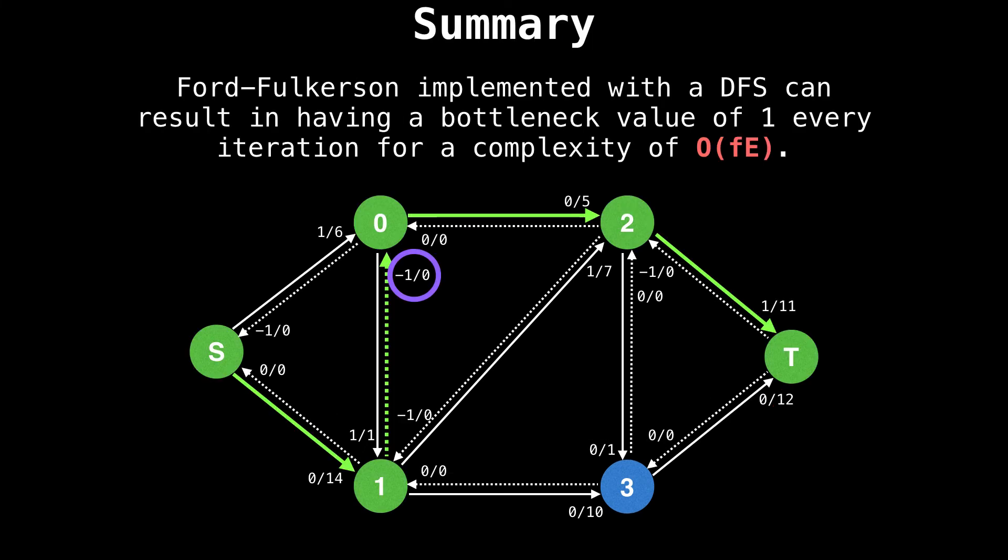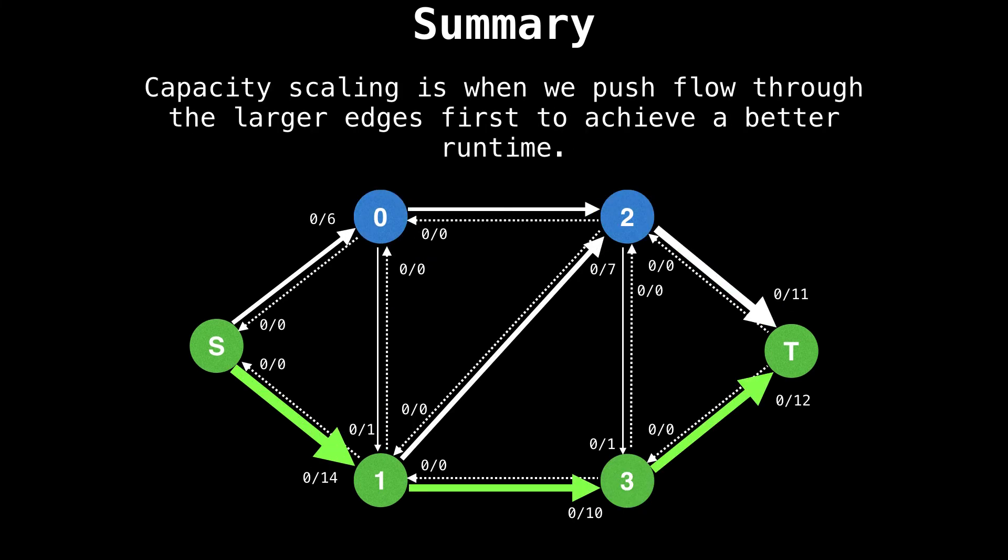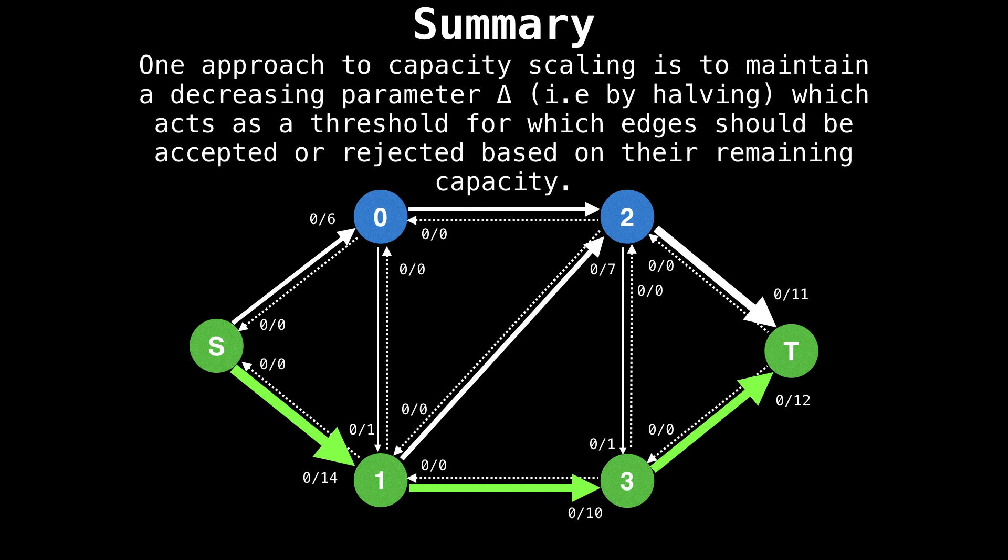So in summary of what we have learned about, we know that Ford-Fulkerson implemented with a depth first search can result in having a bottleneck value of one in each iteration, which kills the time complexity. Capacity scaling is when we push flow only through larger edges first to try and achieve a better runtime. One approach to capacity scaling is to maintain a decreasing parameter delta, which acts as a threshold for which edges should be accepted and which should be rejected based on their remaining capacity. This is a pretty simple but extremely powerful idea that greatly speeds up finding the maximum flow.